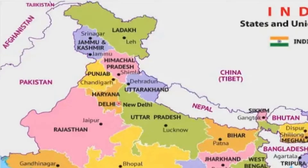On 5th August 2019, the government separated Jammu and Kashmir, dividing it into two Union Territories: one was Ladakh and the other is Jammu and Kashmir. So you can see the two Union Territories.